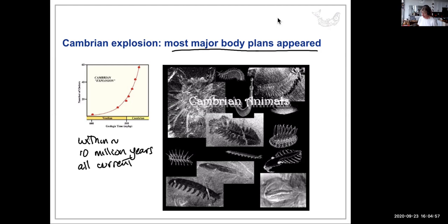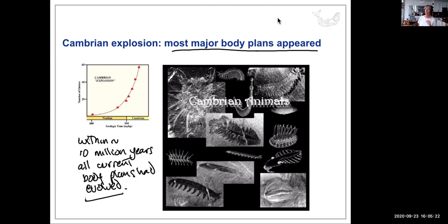All current body plans had evolved within about 10 million years, though many are very modified today. It's not to say there weren't invertebrates before then — some were discovered in Australia (the Ediacaran fauna), though people initially thought they weren't significant.